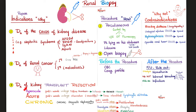Kidney biopsy can also help us diagnose kidney transplant rejection. After receiving a new kidney, the body's immune system starts attacking the new kidney because it's foreign. We have hyperacute rejection, acute rejection, and chronic rejection. The only one that is treatable is acute rejection.